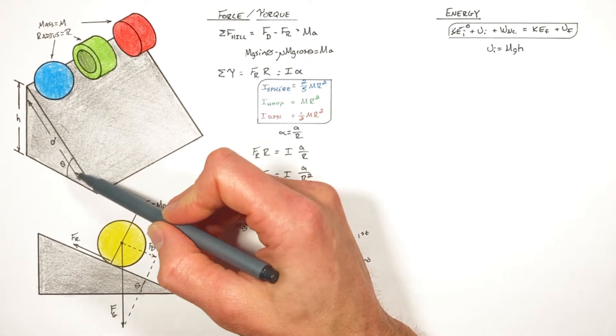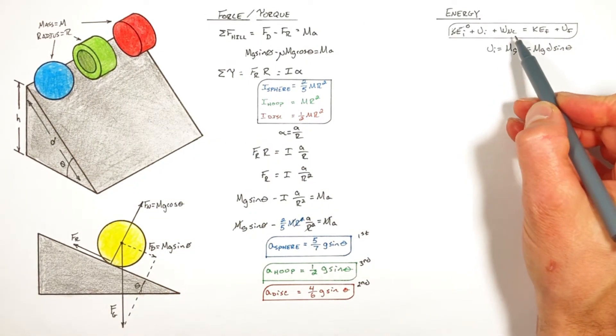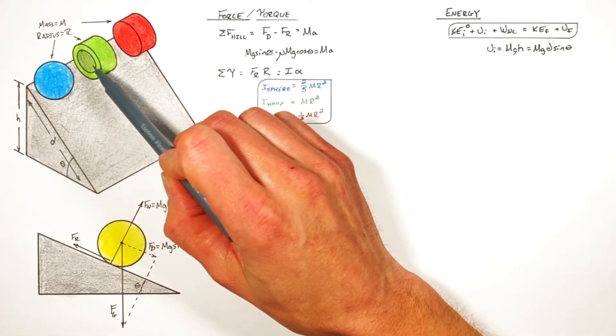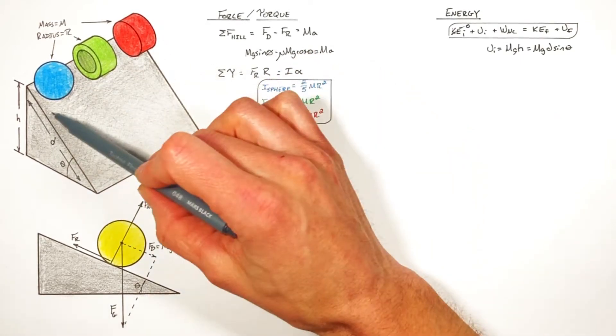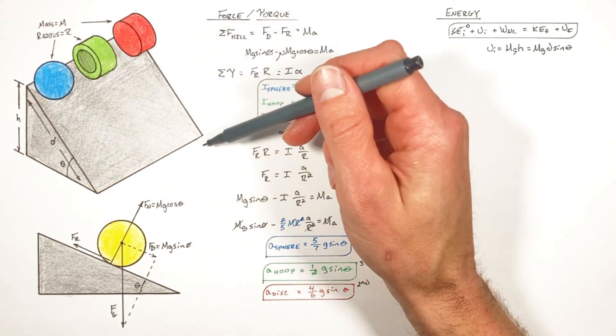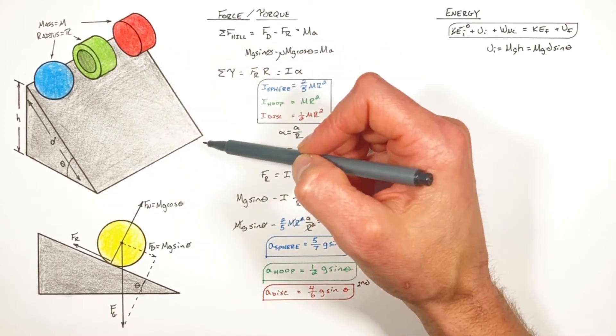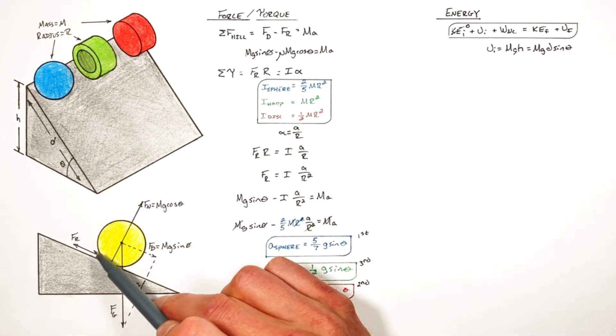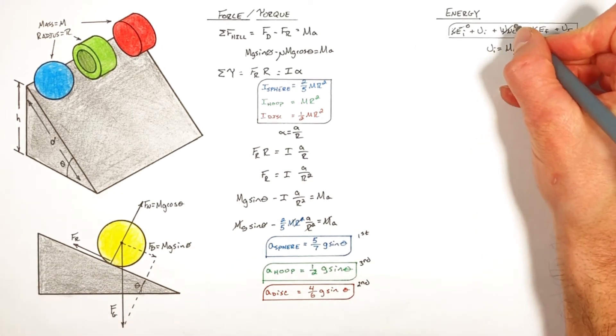Now this next term is what we call the non-conservative work. That's typically the work by friction acting on these objects. And friction is in fact acting on these rolling objects as they go down the hill. If there was no friction, they wouldn't roll, they'd just slide like an ice cube down the hill. The catch is friction in this case does no non-conservative work.